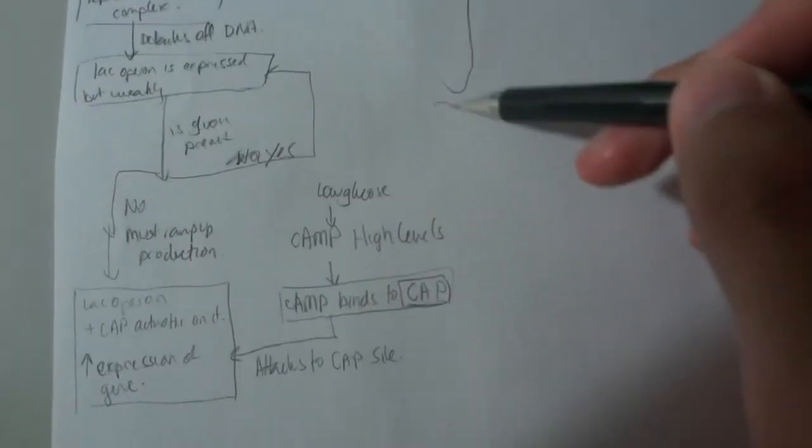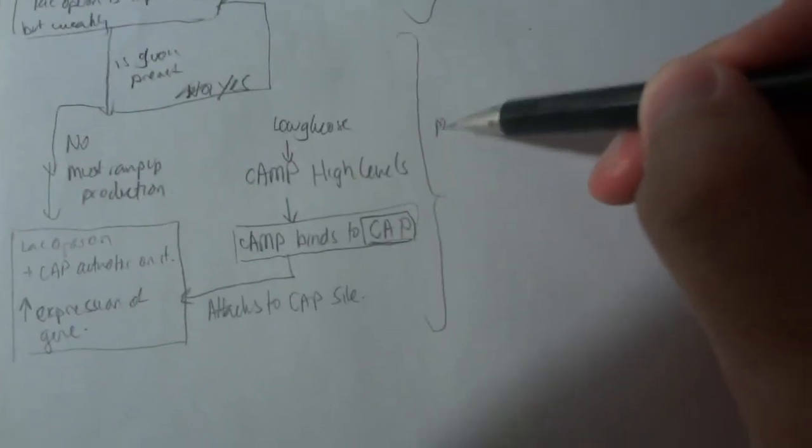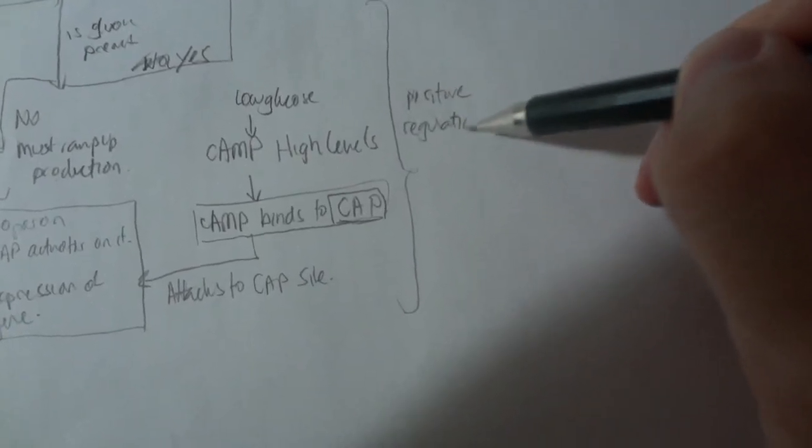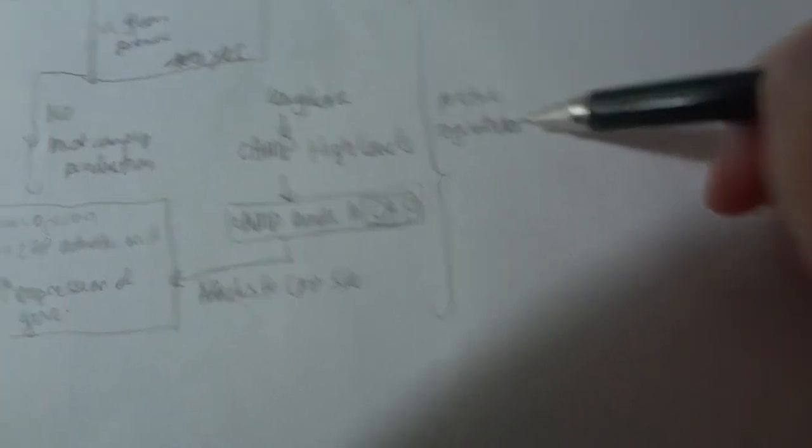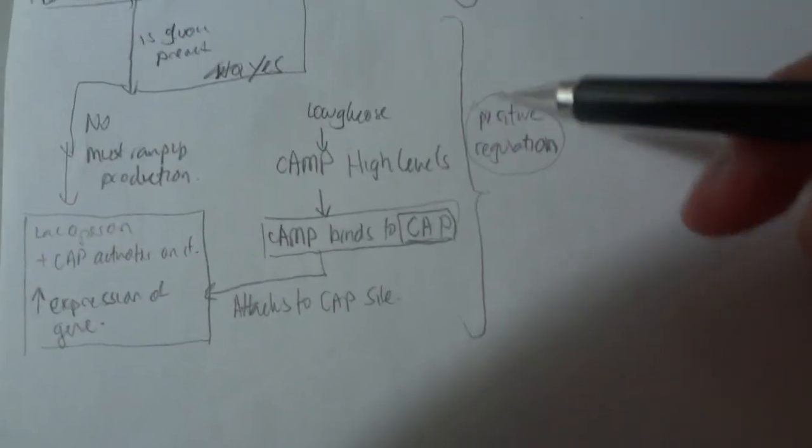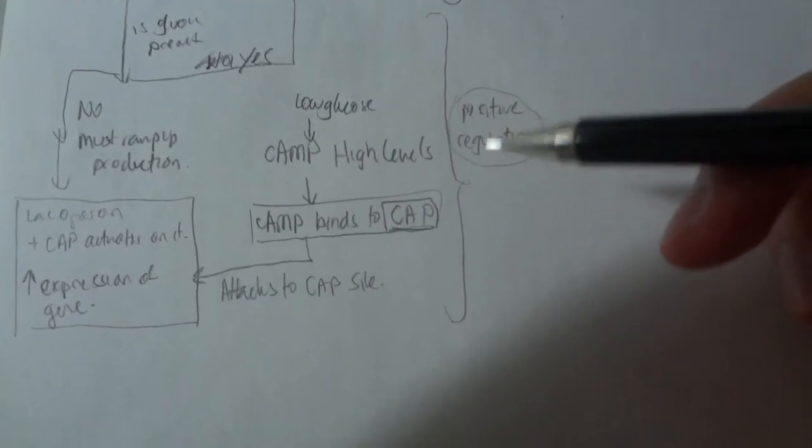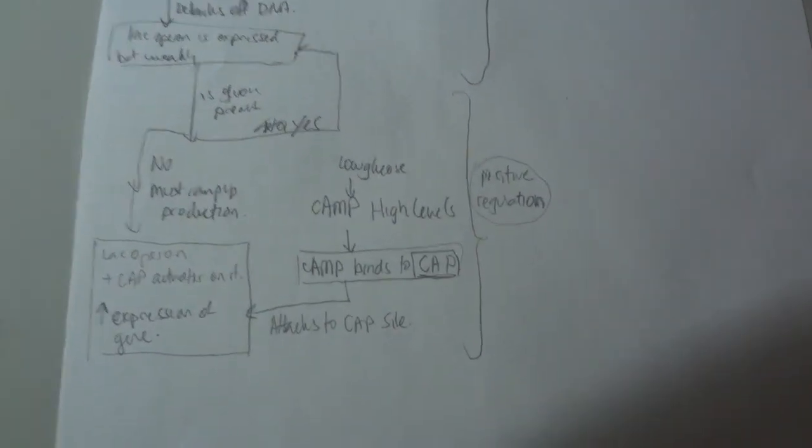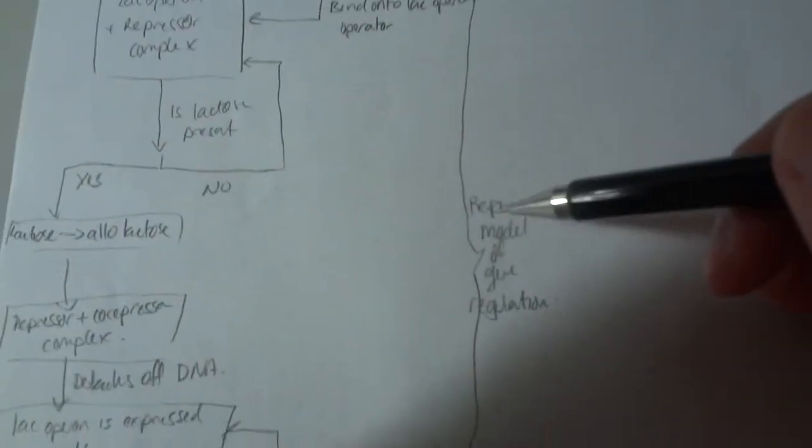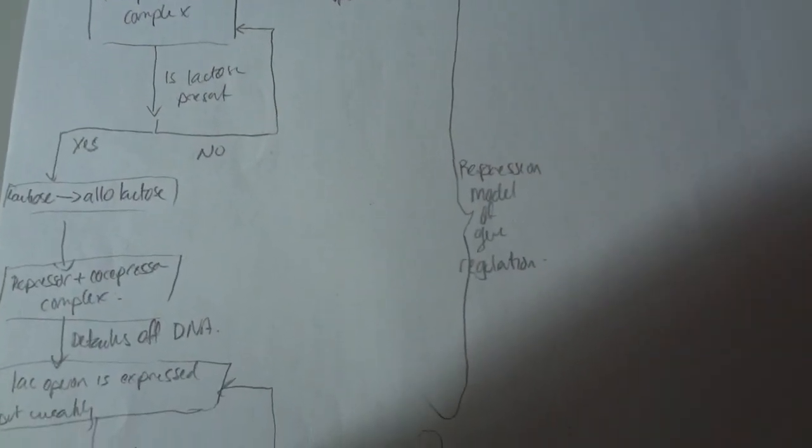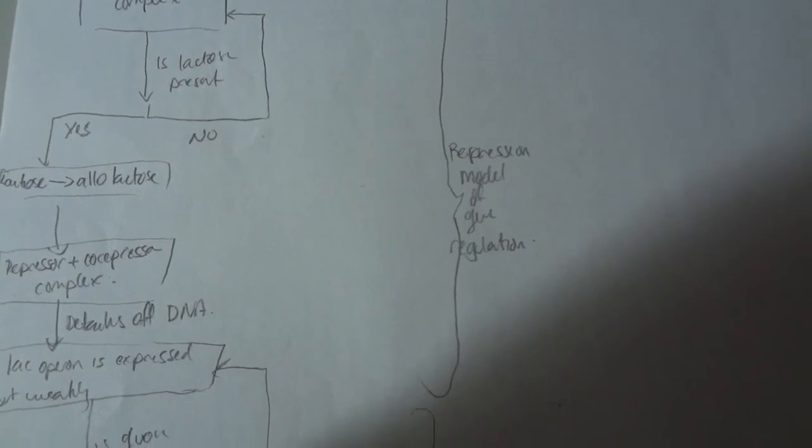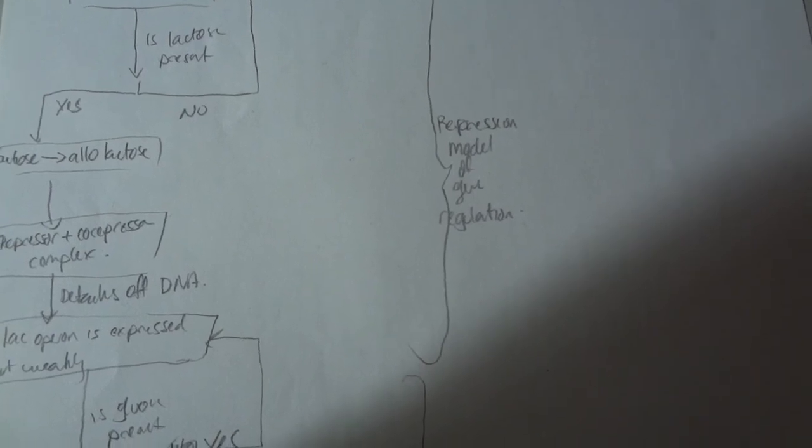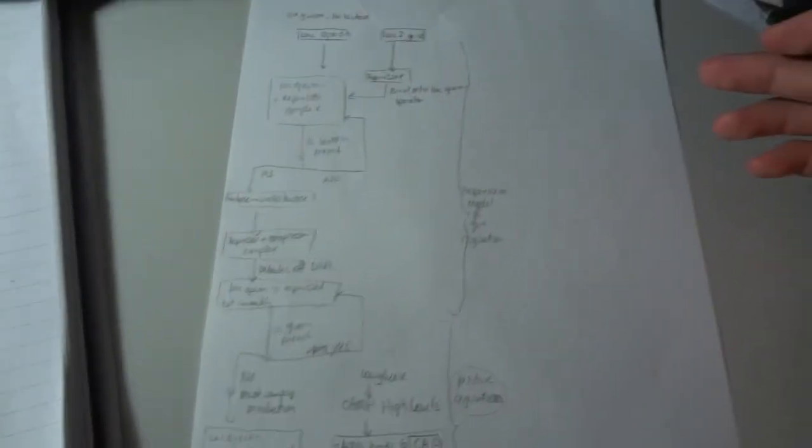And this section of the flowchart we will call positive regulation. Because positive is sort of like, by analogy, jamming on the accelerator on a car. If it's on, then it lets the car move faster. Whereas repression is negative regulation. Consider it to be the brakes on a car. If you turn on the brakes, then that will decrease the DNA transcription. So that's basically it.